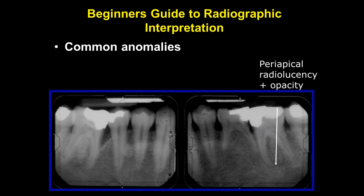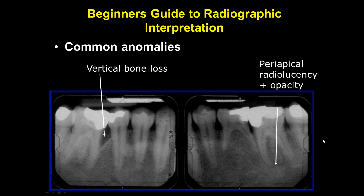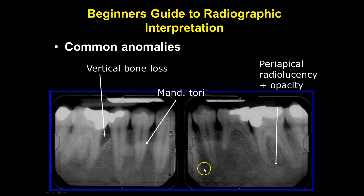Periapical radiolucency at the apex, as well as an opacity at the apex. We also have vertical bone loss and mandibular tori. Look at the image and see the generalized opacity going on here — the patient more than likely has some mandibular tori.